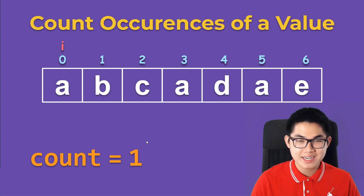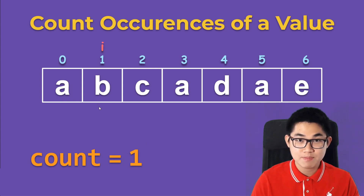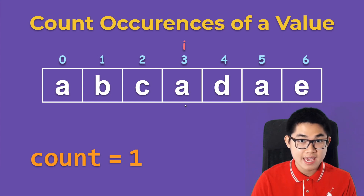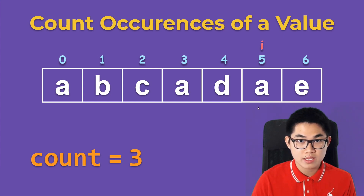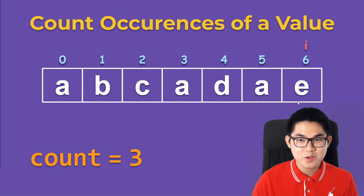We see that at index zero we have A, so we increment count to one. We go to the next letter, it's B. We move to the next one, it's C. The next one we see that we have A again, so we increment count to two. We move to the next element, it's D, and next it's A so count becomes three. Then we move to the next one and it's E, so at this point we're at the end of the array.